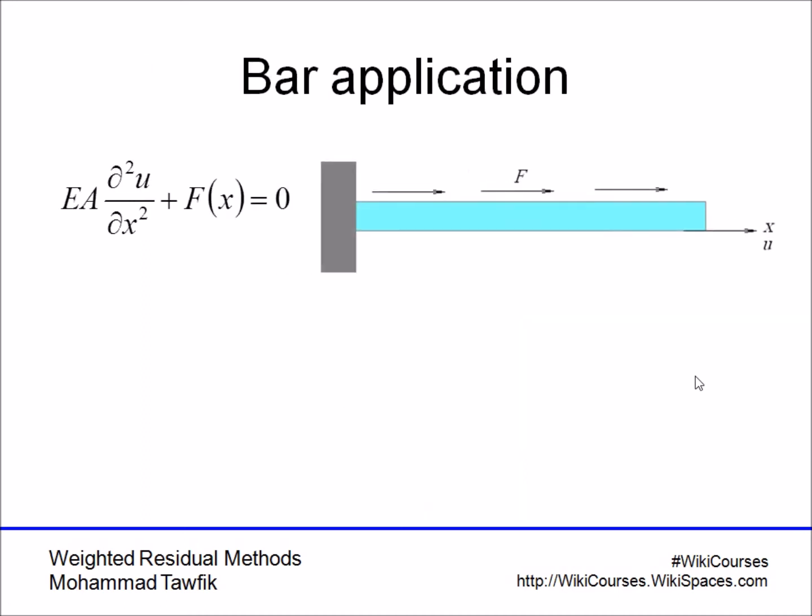Now, let's see what we will do if we assume that u of x is a summation of some functions, psi_i of x, each multiplied by an unknown coefficient a_i, and then we add all this up. If we substitute into the differential equation, you'll get the summation. Of course, EA is a constant, so EA gets out of the summation here.